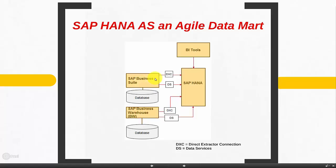The data is gathered from the Business Suite into the HANA database using DXC, OR, and Data Services. Data Services is the ETL tool and DXC is a special purpose tool. Similarly, data is brought in from an SAP Business Warehouse using DXC and Data Services. Once data is brought in from these two source systems, you can collate this information, build models, and then provision it to the BI tools.